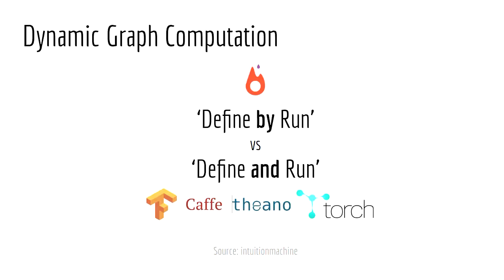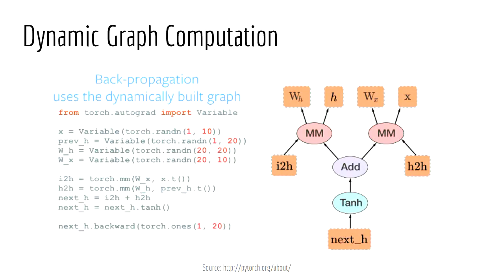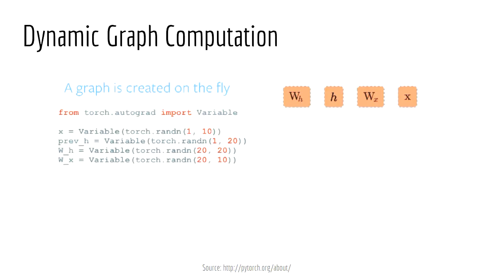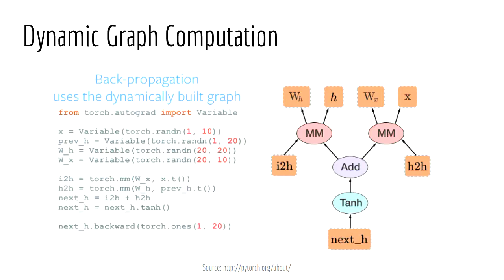Dynamic graph computation, or DGC, is what PyTorch runs on, as opposed to static graph computation which its cousins like TensorFlow, Caffe, or Torch run on. A really good way to describe PyTorch is that you define your network by running it, whereas with static graph computation you define your network and then run it. It's hard to visualize this process, so I included a GIF from the PyTorch website. You define your variables and describe how they interact, and the graph is created during interpretation rather than being interpreted then created.